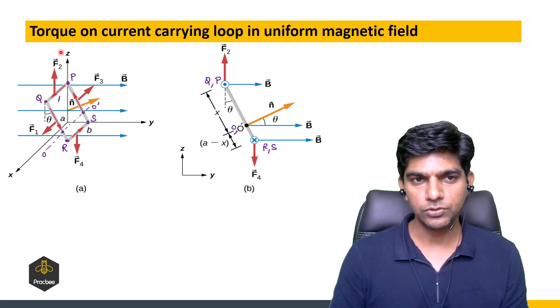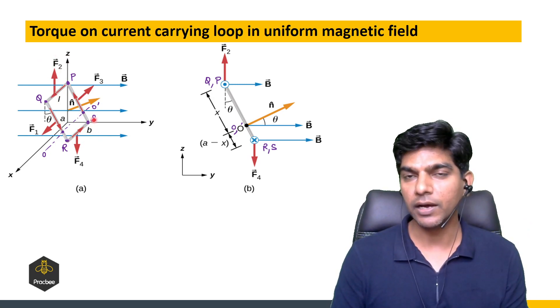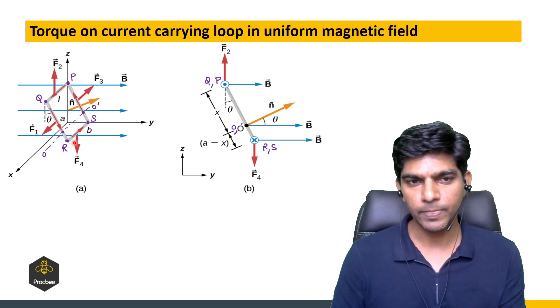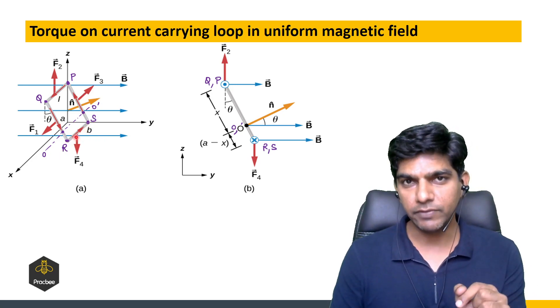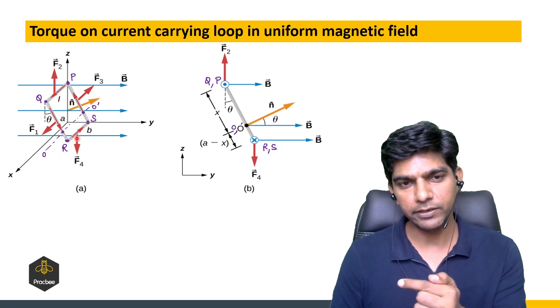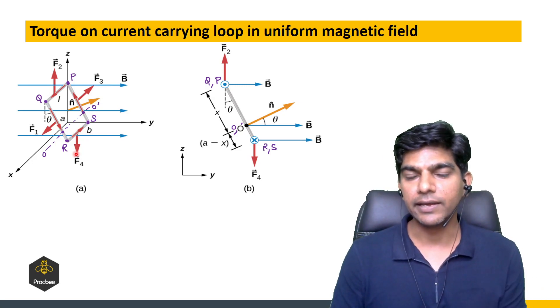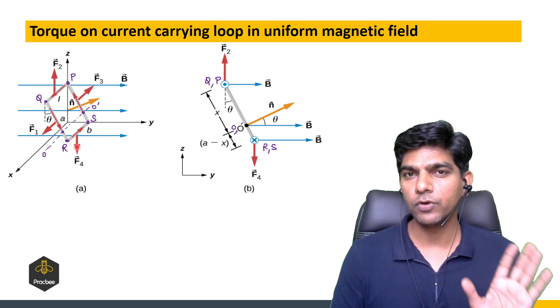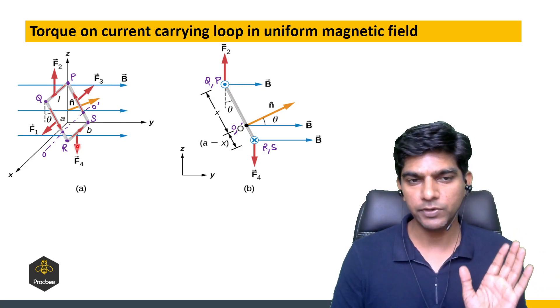Similarly if we talk about RS, in RS the current is in the negative x direction, magnetic field is in the y direction, so here the force will be in the negative z direction. So the formula is I L cross B we have applied, the same formula that we studied in previous videos.